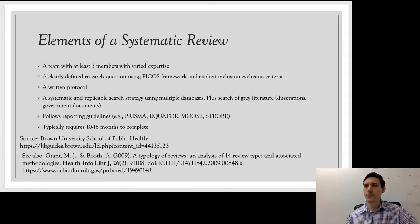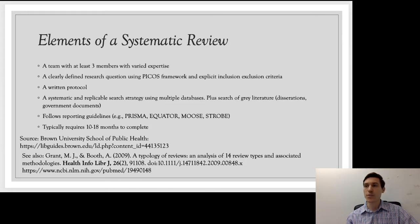The fourth element of a systematic review is that it should be replicable. The search strategy should be replicable and should use many databases. It should also be searching grey literature, which means PhD dissertations, government documents, and any other type of document that might be on the internet, not just those published within research databases. The fifth element is that it should follow reporting guidelines — there are many, with acronyms like PRISMA, EQUATOR, MOOSE, and STROBE. We'll talk about a few of those in more detail in this course. A systematic review needs to have set guidelines that make it fit within a framework considered best practice.